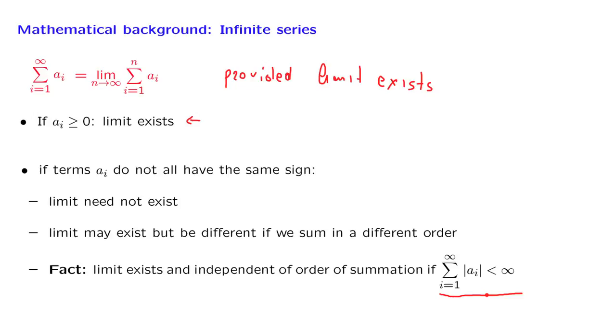If it turns out to be finite, then the original series is guaranteed to be well defined, to have a finite limit when we define it that way. And furthermore, that finite limit is the same even if we rearrange the different terms, if we rearrange the sequence with which we sum the different terms.